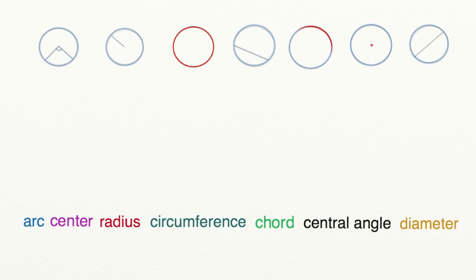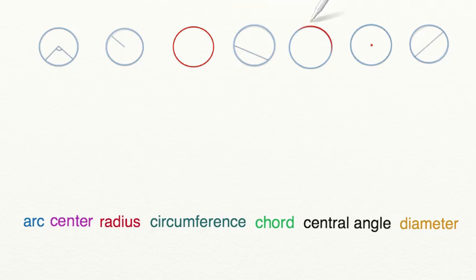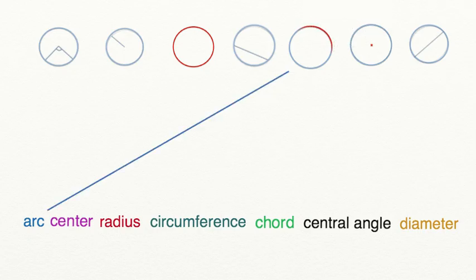Let's go through some practice problems together. Can you match the diagram to the vocabulary word? Let's see if we can find the diagram which matches the word arc. An arc is a partial piece of the edge, so we're going to look through our pictures until we see part of the edge highlighted. And as you can see, we have this arc around our circle highlighted here, which means that's our diagram for arc.